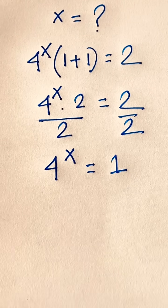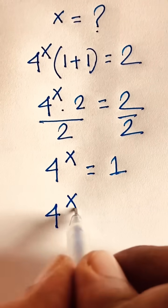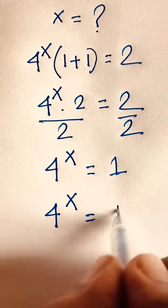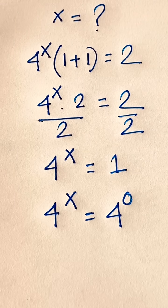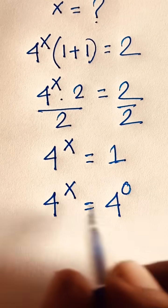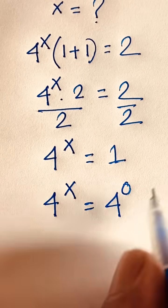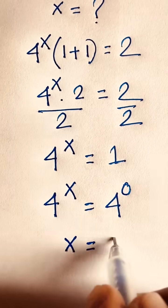4 to the power x equals 1, which is the same as 4 to the power 0, according to exponential law. Since the bases are the same, the exponents must be equal, so x is equal to 0.